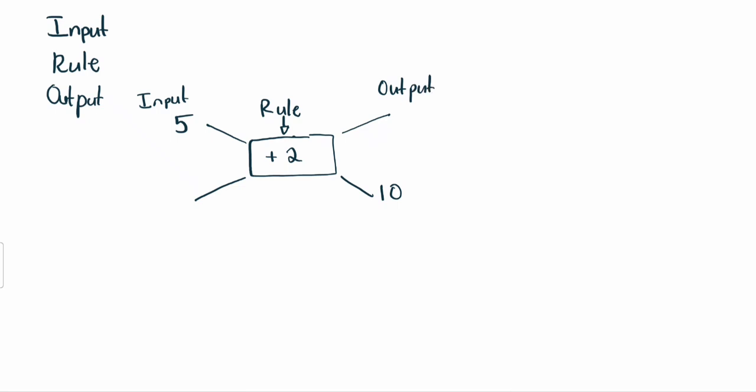Now the input is the number you get. The input is the number you put into the calculation. The rule is the calculation itself. And then the output is the number you get when the input is calculated using the rule.